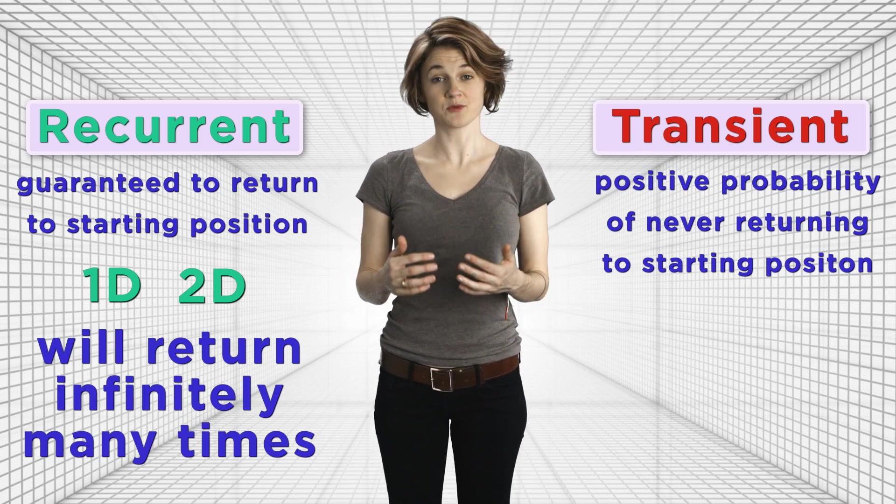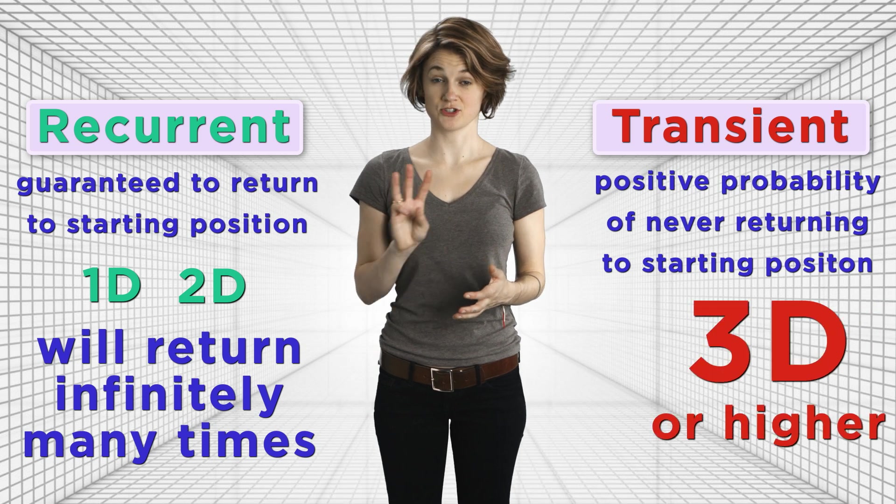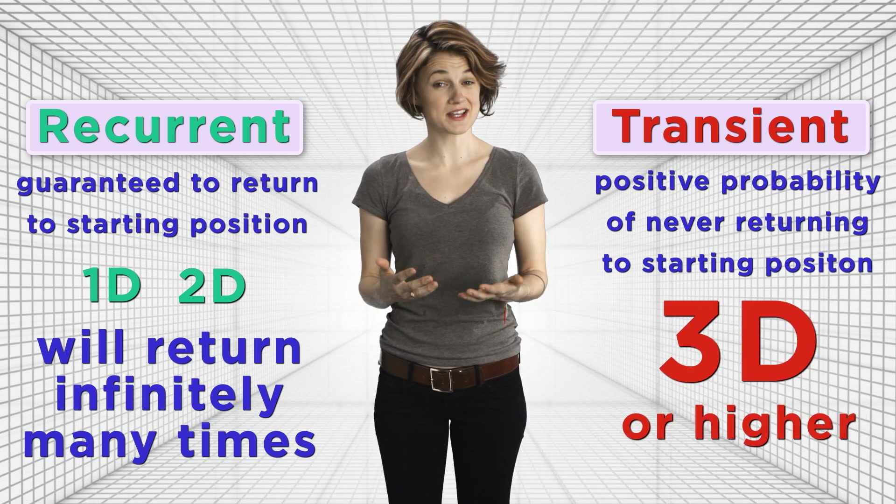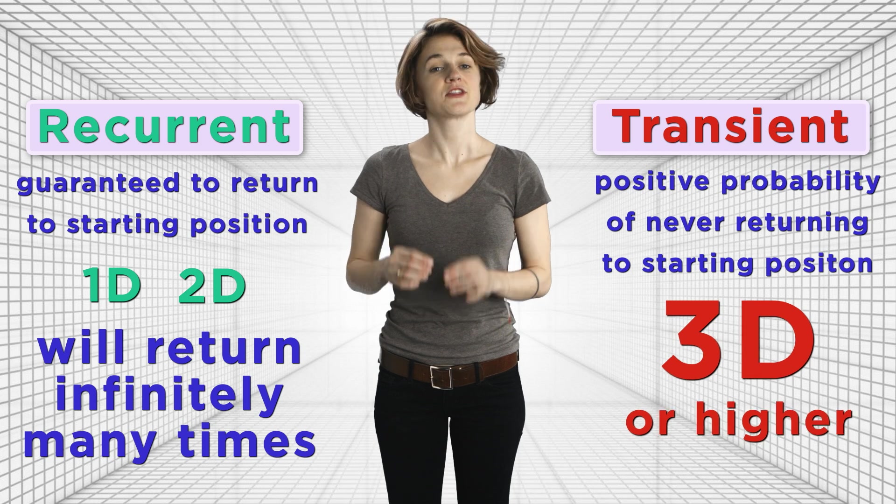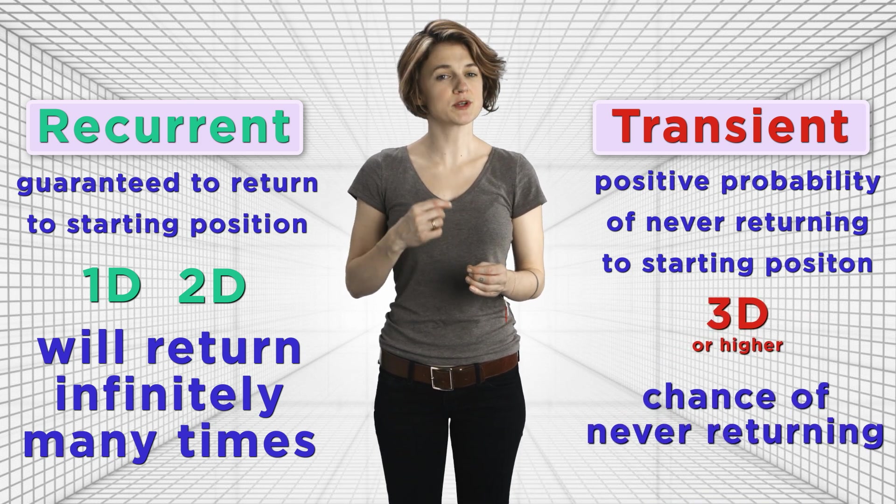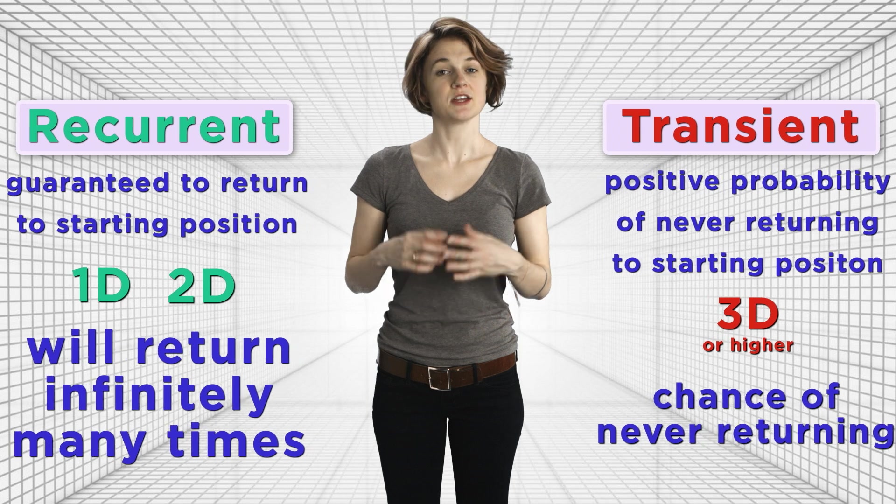But a random walk on the integer lattice in dimensions 3 and higher is transient. In 3, 4, or 100 dimensions, there's a chance that the random walk will escape and never return to its starting spot. Intuitively, this kind of makes sense—in higher dimensions, there's more space or options for where a random walk can wiggle off to. A favorite joke among mathematicians is: a drunk man will eventually find his way home, but a drunk bird may get lost forever.